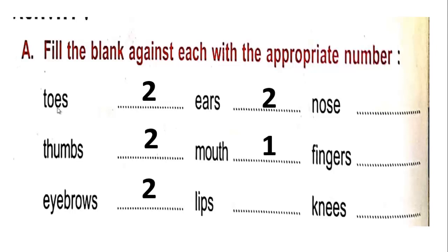How many lips we have? 2 lips. How many nose we have? 2 nose? Wrong, we have only 1 nose. How many fingers we have? 8 fingers. How many knees we have?